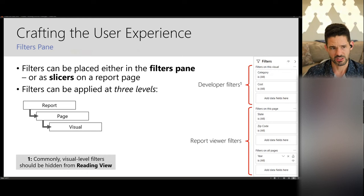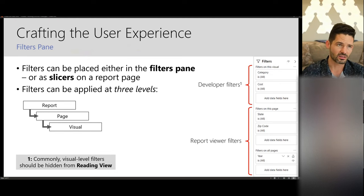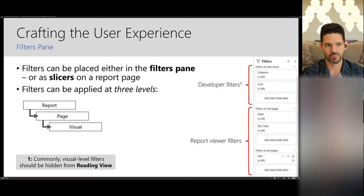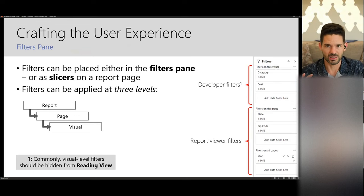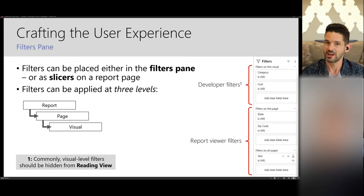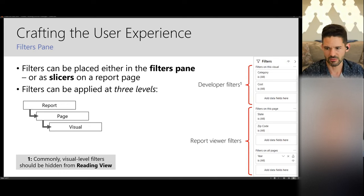There are some limitations today: hiding a filter and making header configuration changes can only be observed in reader mode in the Power BI service. Those things are on the roadmap for desktop, where eventually we'll get a preview reader mode that mirrors the published experience. That will drastically reduce the amount of time having to publish back and forth to make these changes, but it is sadly a limitation today.